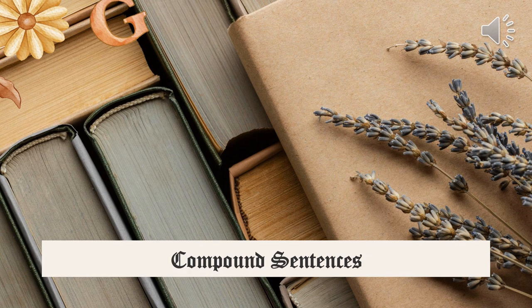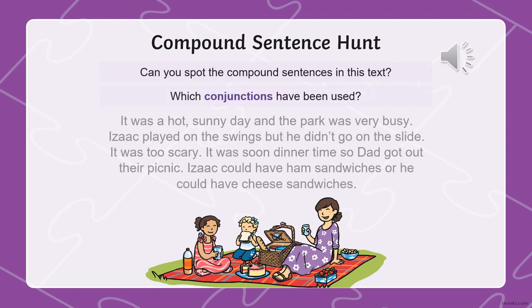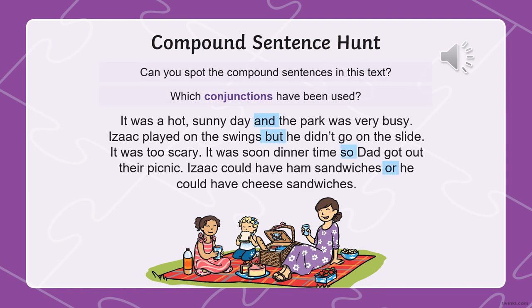Now we're moving on to the last part, which is the most fundamental aspect of English grammar: compound sentences. They are formed by combining two or more independent clauses — complete thoughts or sentences — using coordinating conjunctions. The aim of our lesson is to recognize and write compound sentences by joining two simple complete sentences using conjunctions, linking words, and FANBOYS. We're going to have a lot of interactive tasks and activities including life sheets, scavenger hunts, and videos to help you spot and understand compound sentences.